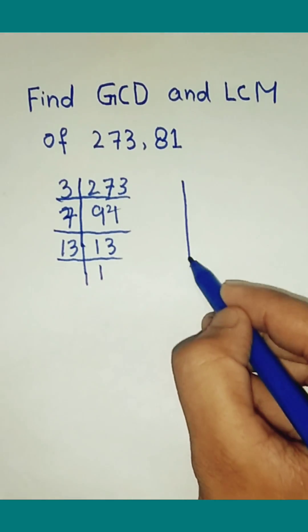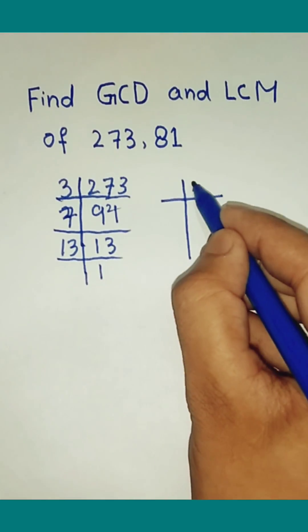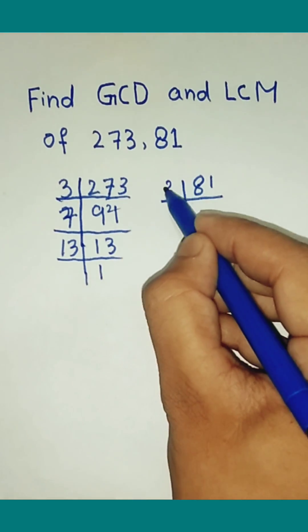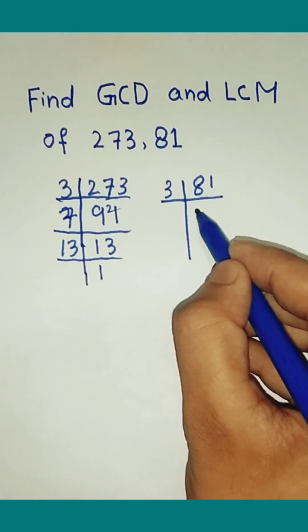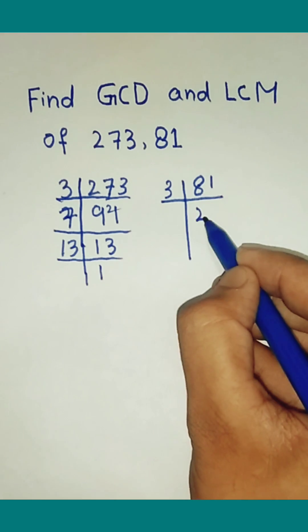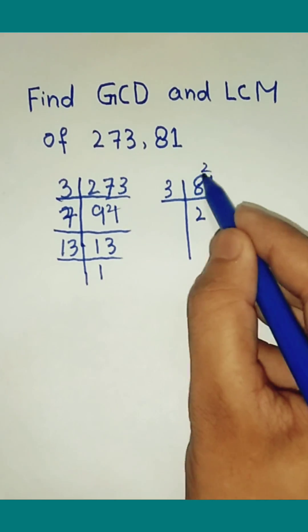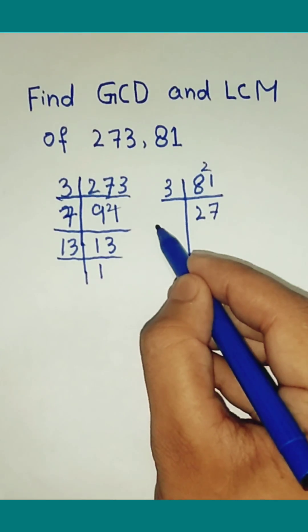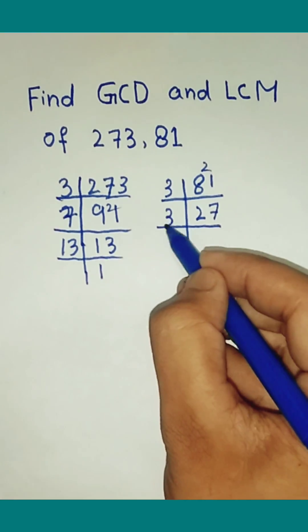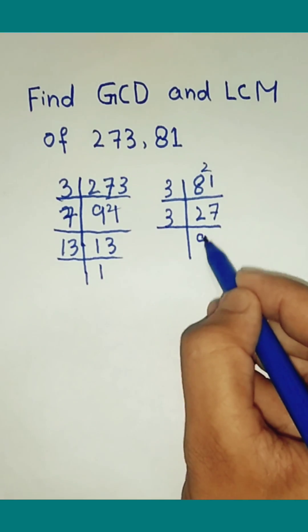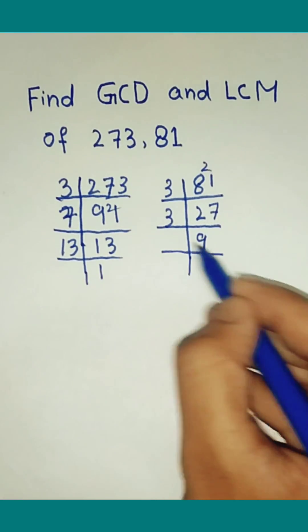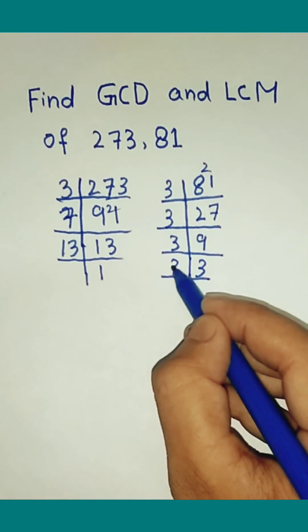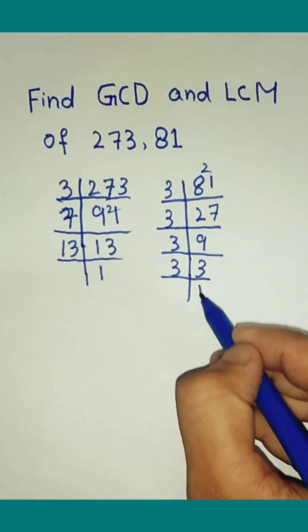Now 81. 3 2s are 6. 3 7s are 21. 3 9s are 27. 3 3s are 9. 3 3s are 1. The prime factorization of 81 is completed.